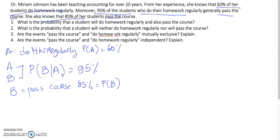Now, let's start with number one. What is the probability that a student will do homework regularly and also pass the course? So, remember, we have and here, so this would be joint probability, P(A and B).